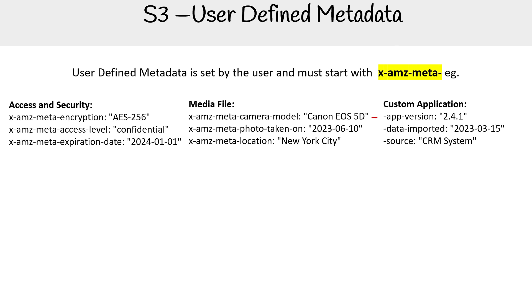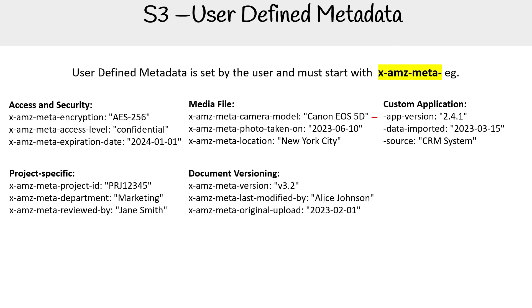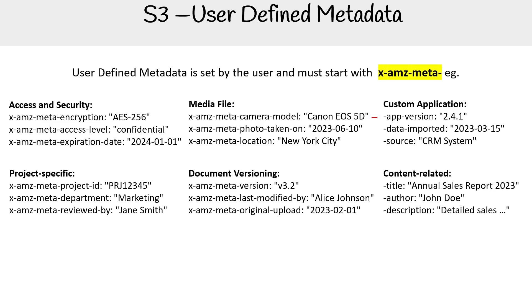We have app version, data imported, source. For project-specific, we could have project ID, department, reviewed by. For document versioning — what is the version of this file, when was it last modified, what was the original upload date?